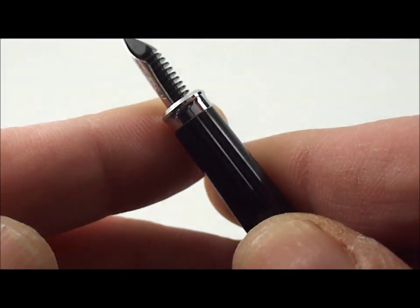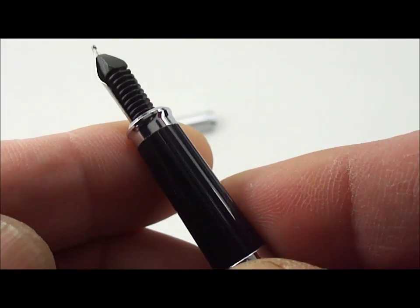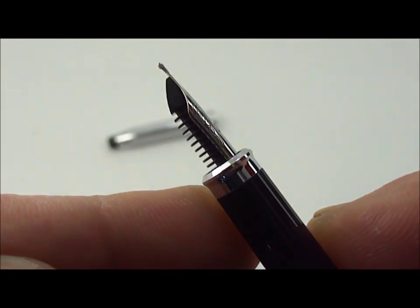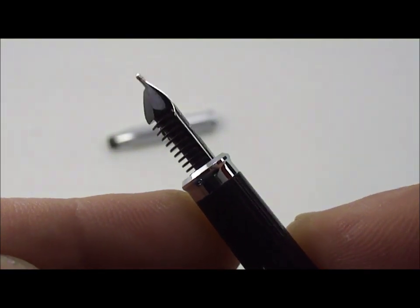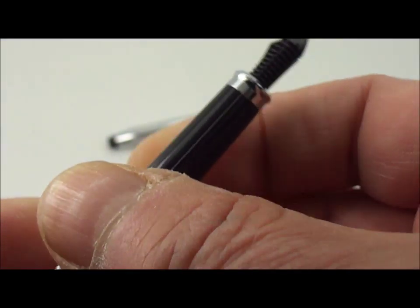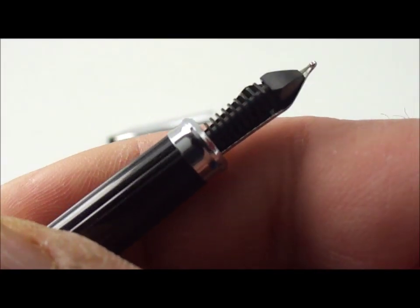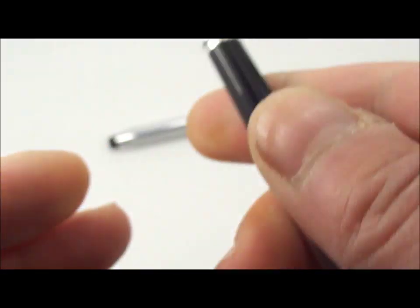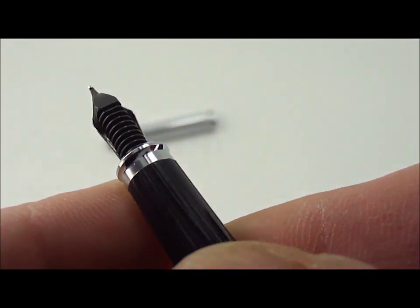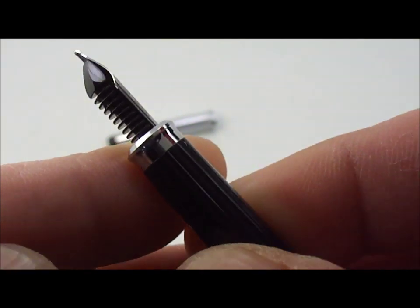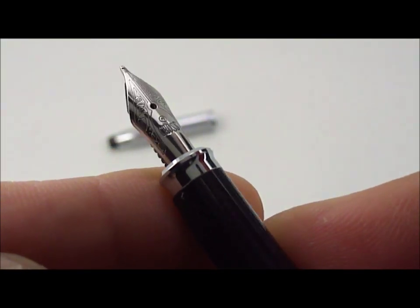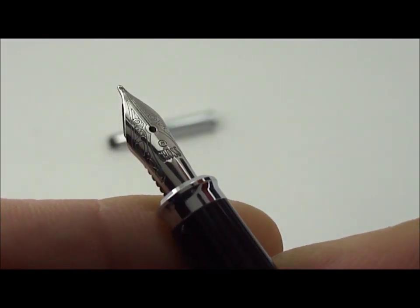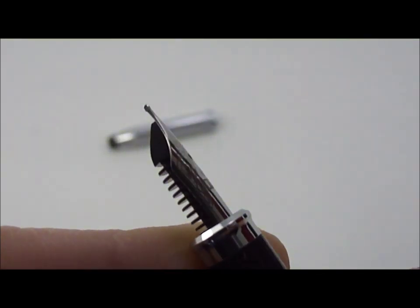And to the reverse of the nib we have this plastic feed which, as you can see, has these fins underneath it. So I'll just give you a little bit of a close-up on there of the feed to the back. I need to catch the lights on it. Let's just show you the nib again here. Hopefully you can see the beautiful detail there.